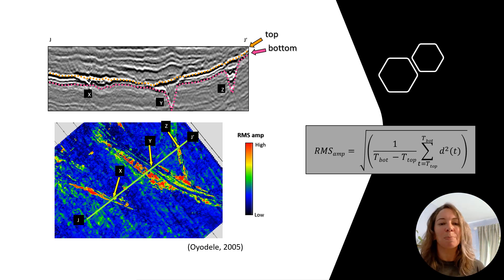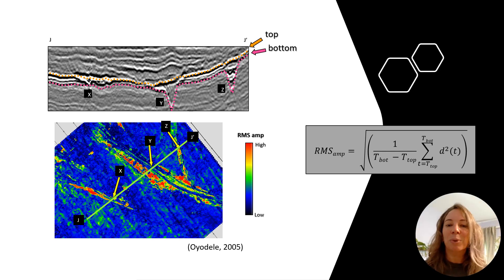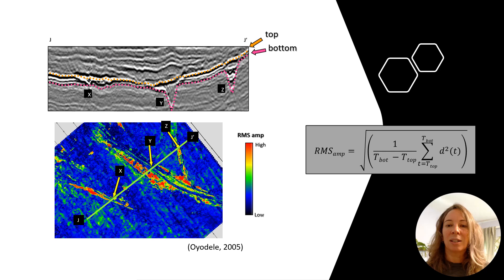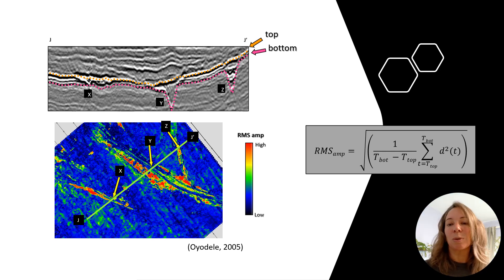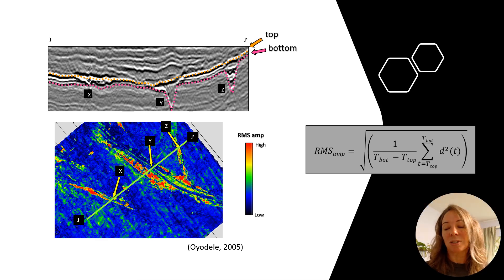In this example, we are looking at the amplitude in the window from the top of the formation to the base. If we link higher RMS amplitudes to sandier facies or hydrocarbons, we would interpret those channels as filled with something we may be interested in.